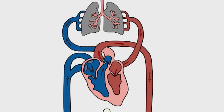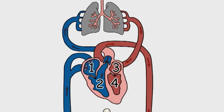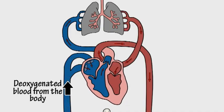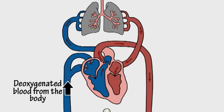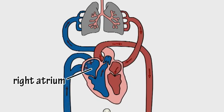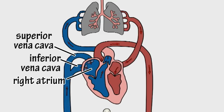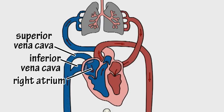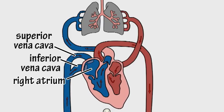The heart has four chambers or cavities inside it. Dark red oxygen-depleted blood from the body enters the upper right chamber of the heart, or right atrium, through two large veins called the superior vena cava and inferior vena cava.